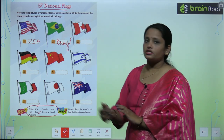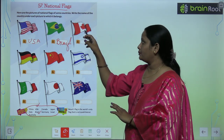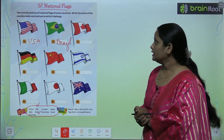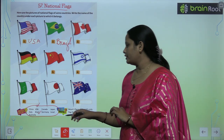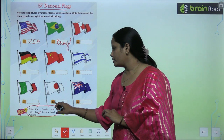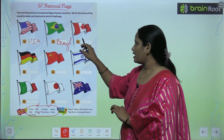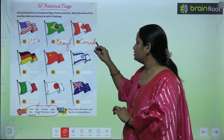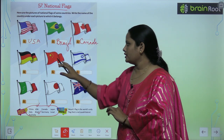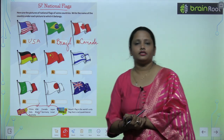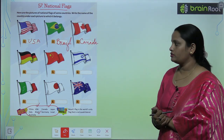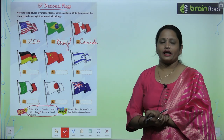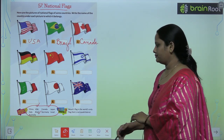This third flag — where you can see in the middle there is a maple leaf — this is of Canada. So similarly, find the names of the countries whose flags are displayed here.